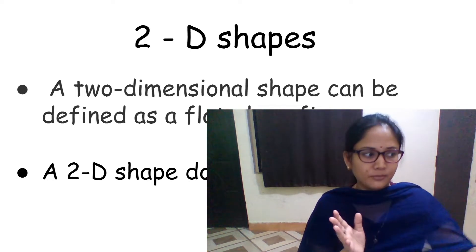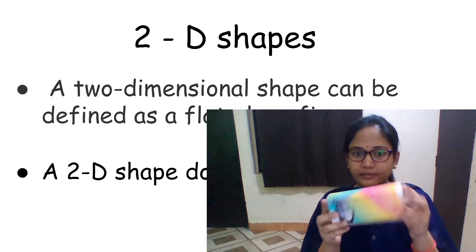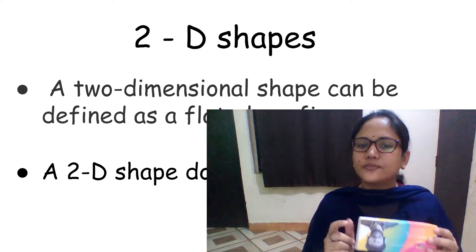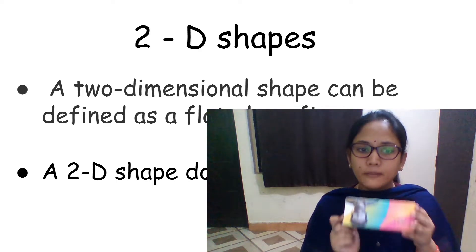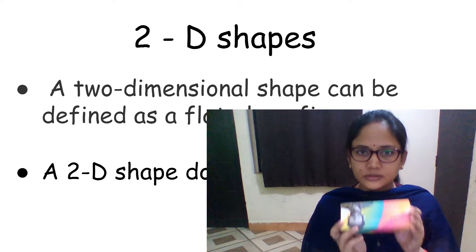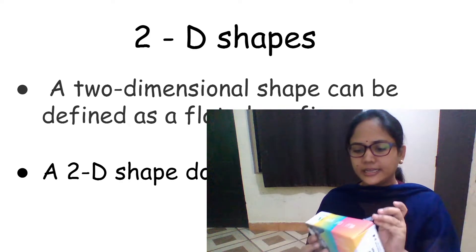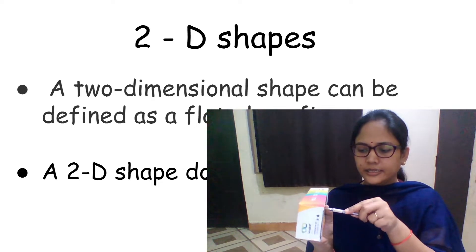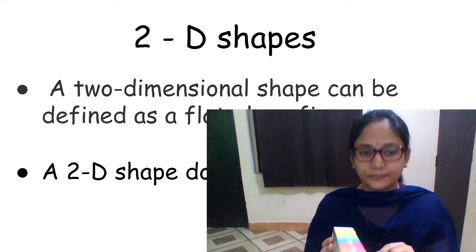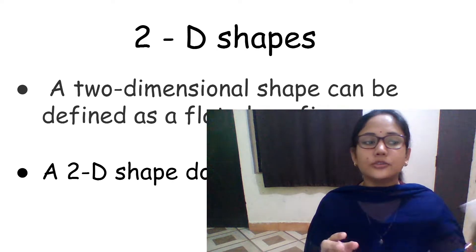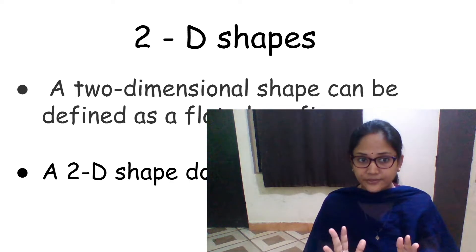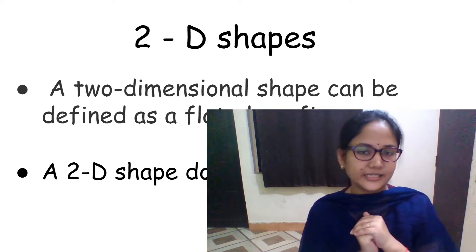For example your pencil box, or any cover that you have at your home — all these things they have some shape. But all these shapes, they are not two-dimensional. They are having some depth. If I pierce this pen in here, it will go somewhere. So that is what depth is. Today we are going to learn about shapes that we see in our real life everywhere. So let us get started.